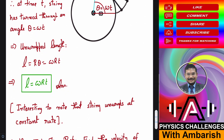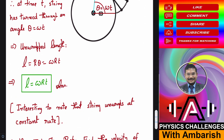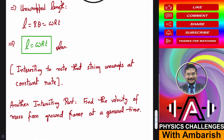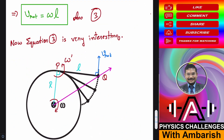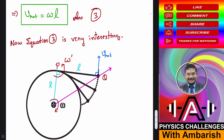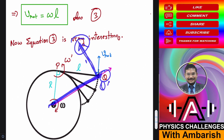An extension to this problem: we can also find the velocity of the mass from the ground frame at general time. We know V_rot from the rotating frame. Let Q' be the point in the rotating frame just below mass Q. From the ground frame, velocity of Q equals velocity of Q' plus V_rot. The velocity of Q' is perpendicular to the radius and equals ω·√(R² + L²). Adding the two vectors gives the ground-frame velocity.